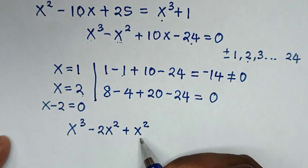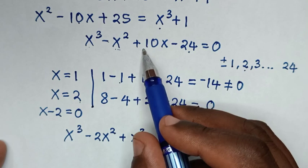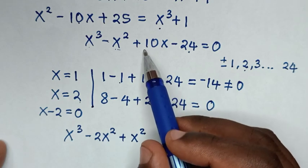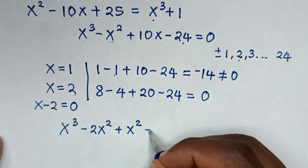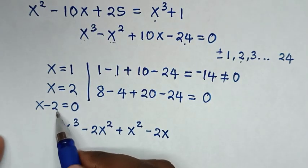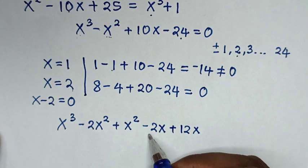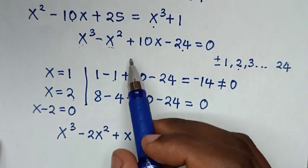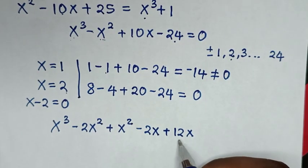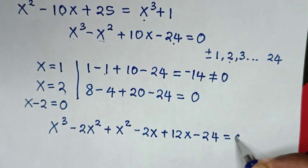For the middle group, we already start with x². Then we split 10x to satisfy the middle and last groups. So 10x is the same as negative 2x — where negative 2x is divisible by negative 2 — then we add 12x. So negative 2x plus 12x is 10x. The middle group is complete. To finish the last group: 12x minus 24 equals 0.